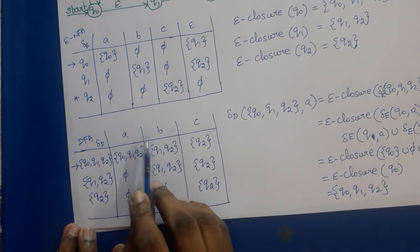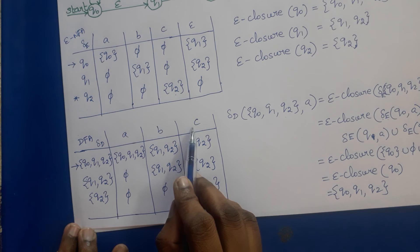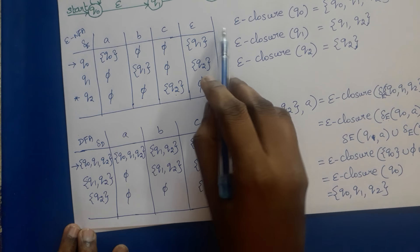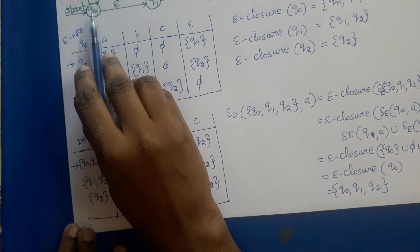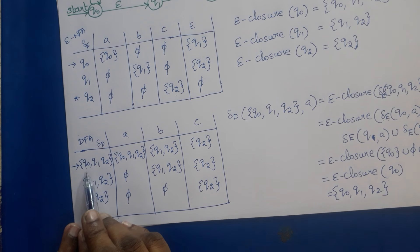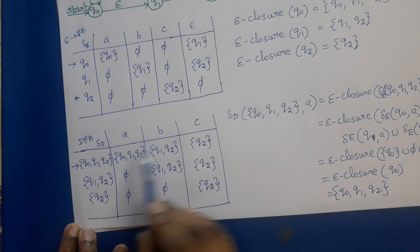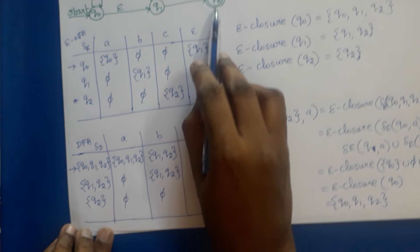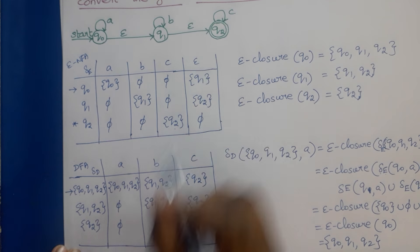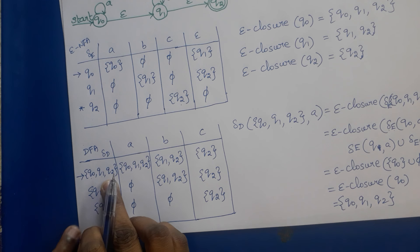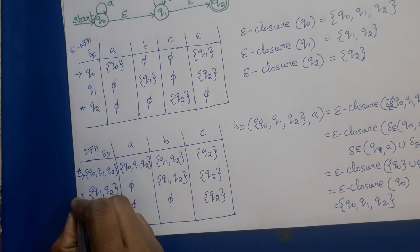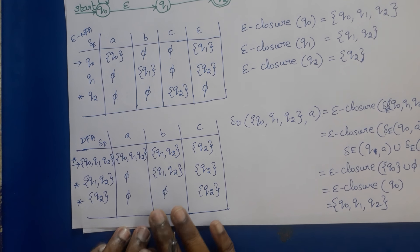Now we have to find the final states. A, B, C are the input symbols and we have listed all the states. The start state is {Q0, Q1, Q2}, which is the epsilon closure of Q0. To mark the final states, we check that the final state of the epsilon NFA is Q2. So all DFA states that contain Q2 are final states. {Q0, Q1, Q2} contains Q2, {Q1, Q2} contains Q2, and {Q2} contains Q2. So all three are final states.